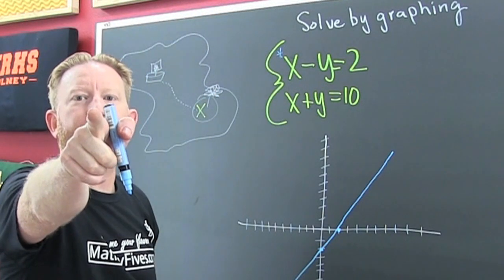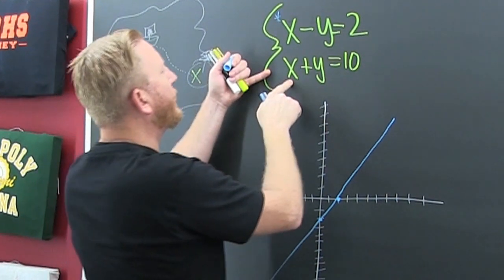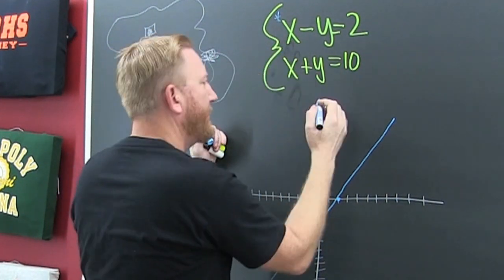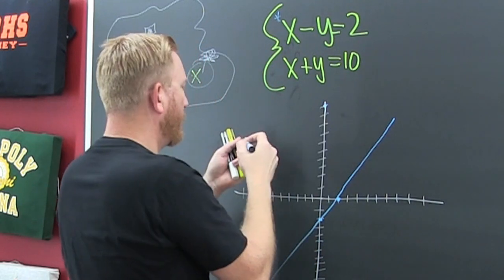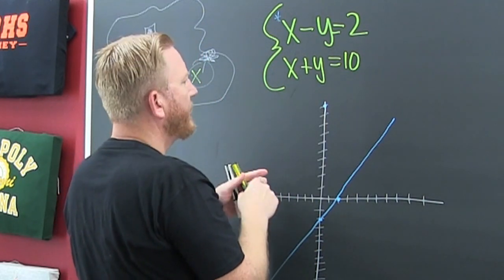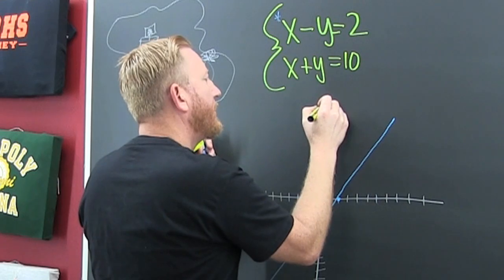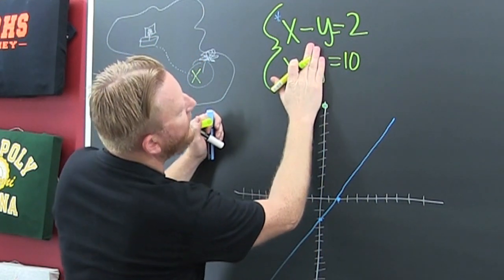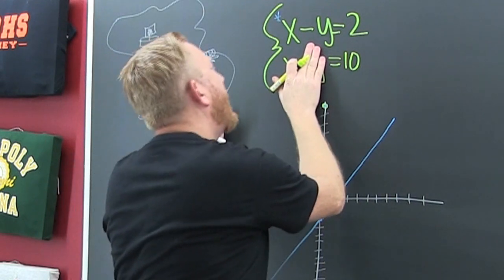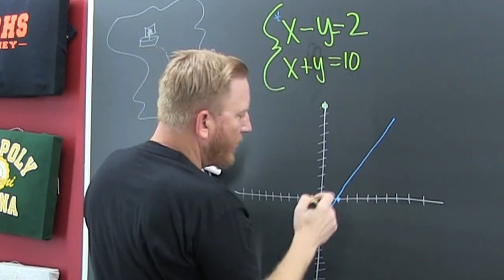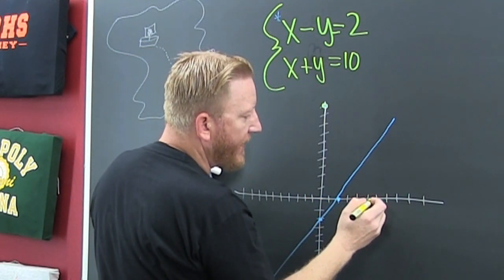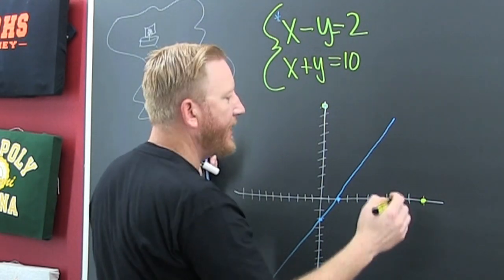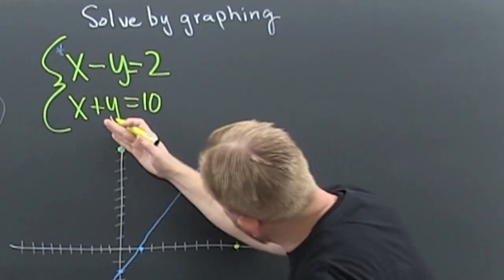Let's graph that other one. So if X is 0 then Y is 10 — right there. Let's put it in a different color — it'll be yellow. And then when Y is 0, X is 10. I'm graphing using intercepts. 1, 2, 3, 4, 5, 6, 7, 8, 9, 10 — right there. And then RULER.